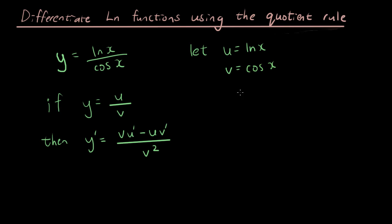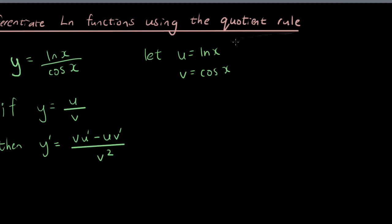So let's differentiate each one. If u is ln x, then u prime would be 1 over x. If you don't know how to differentiate ln x, I suggest you go to one of my previous tutorials. Now let's differentiate v. If you differentiate cosine, you will get v prime equals negative sine x.